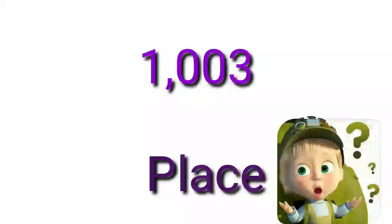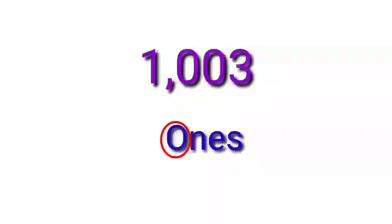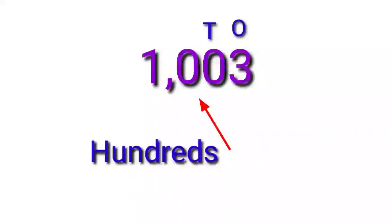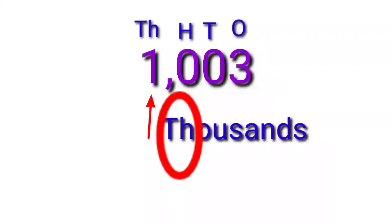These digits have particular places. Do you know the places of each digit? If we know the places of digits, we can read the number easily. The place of three in this number is the ones place, written as O. The next zero is in the tens place, written as T. The next zero is in the hundreds place. Then we see one in the thousands place, denoted as TH.